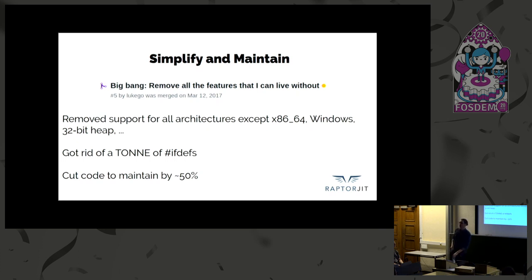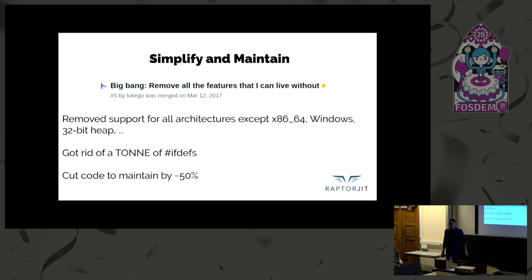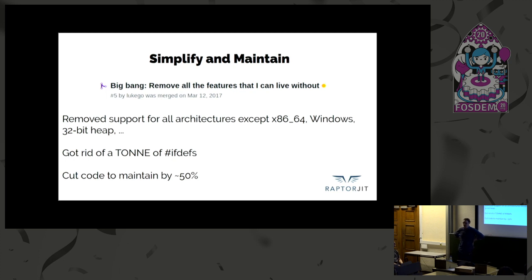In order to simplify and maintain the code, we are doing a big spring clean. Here's a pull request titled 'Big Bang: remove all the features I can live without' — and it says Merged. It removed support for all architectures except x86-64, because that's the only thing we care about right now and it's enough work maintaining one architecture. It removed Windows support and LuaJIT's 32-bit heap mode. This allowed us to get rid of a lot of ifdefs — we're trying to get rid of all ifdefs — and resulted in a total code reduction of roughly 50%, which I think is a big win.